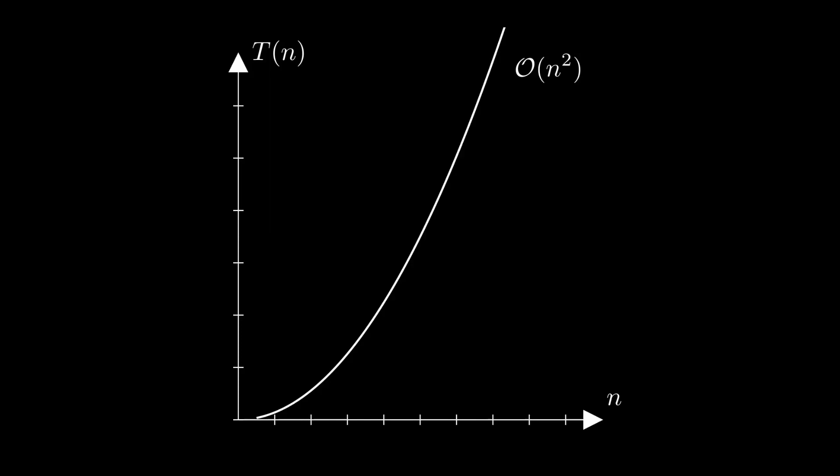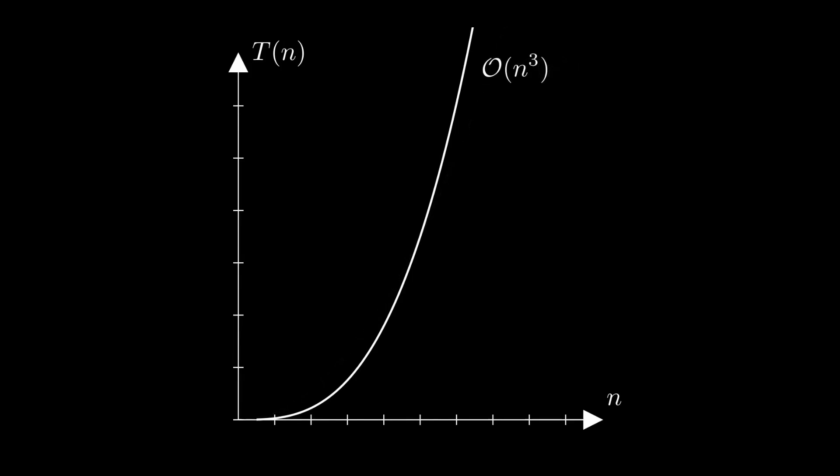And if there is quadratic time complexity, there is also cubic time complexity — so n to the power of 3. If the input length doubles, the running time increases by a factor of 8. Of course this can be continued — n to the 4, n to the 5, and so on. But the larger the exponent above n becomes, the more impractical such algorithms become. A running time with n to the power of some number is also called polynomial running time.